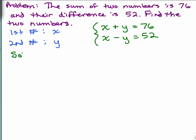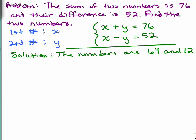The solutions, the numbers are 64 and 12. And you could easily check that when you add those numbers, you get 76. And when you subtract those numbers, you do get 52. So that's the answer to our problem, or you could just say 64 and 12.